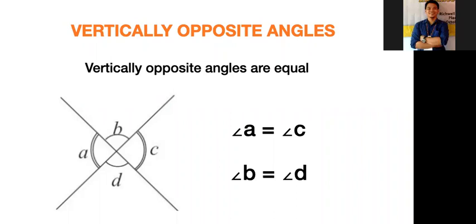Same with angle b and angle d - they are vertically opposite angles, so therefore angle b and angle d are equal. Let's try to solve this given problem.